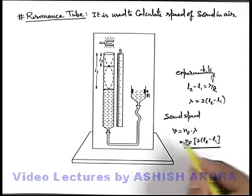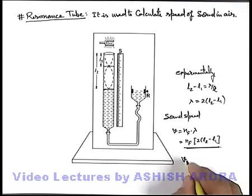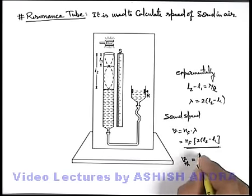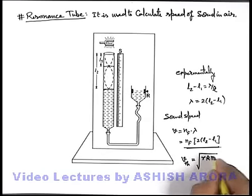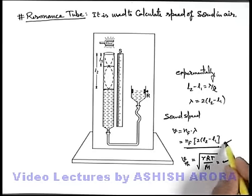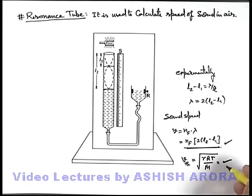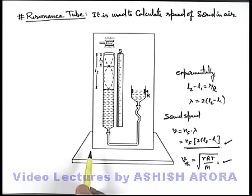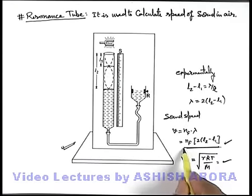This is the experimental speed we have calculated. Theoretically, the speed can be calculated as the square root of gamma R T by M. Using this expression, the theoretical speed can be calculated and we can compare the experimental and theoretical values. If there is any difference, we can talk about the factors due to which it is happening. So this is the way how the experiment of resonance tube is carried out to measure the experimental value of speed of sound in air.